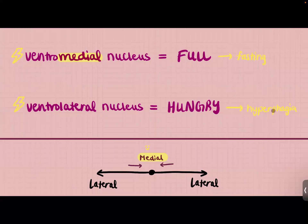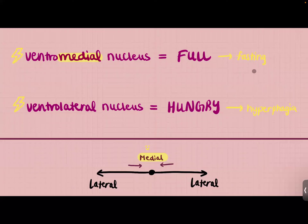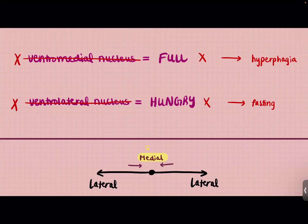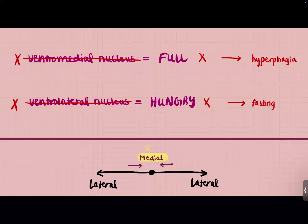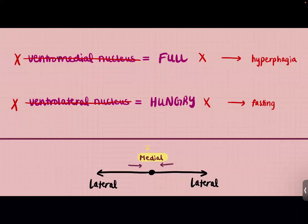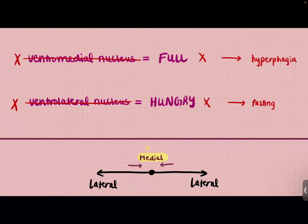Hyperphagia means excessive eating — 'phage' means eat — and fasting means you don't eat. What happens when you inhibit or destroy these nuclei? If you destroy the ventromedial nucleus, you will not feel satiated, and therefore you will eat. If you destroy the ventrolateral nucleus, you will not feel hungry, and therefore you will fast. Basically, just do the opposite of their function.